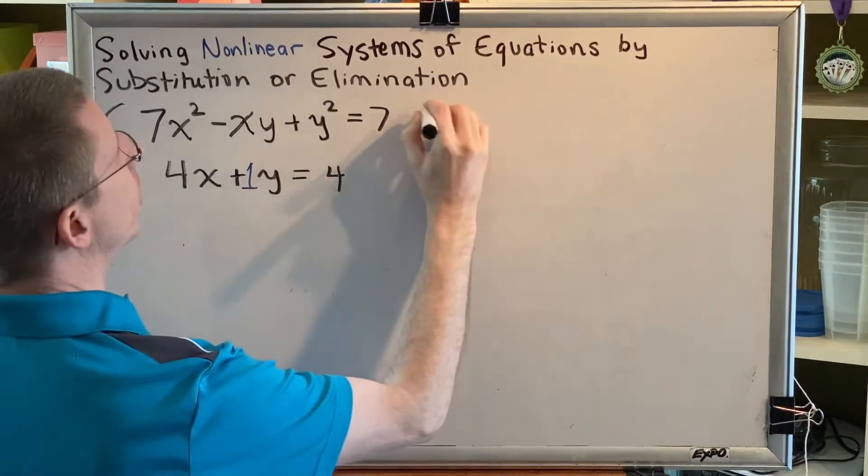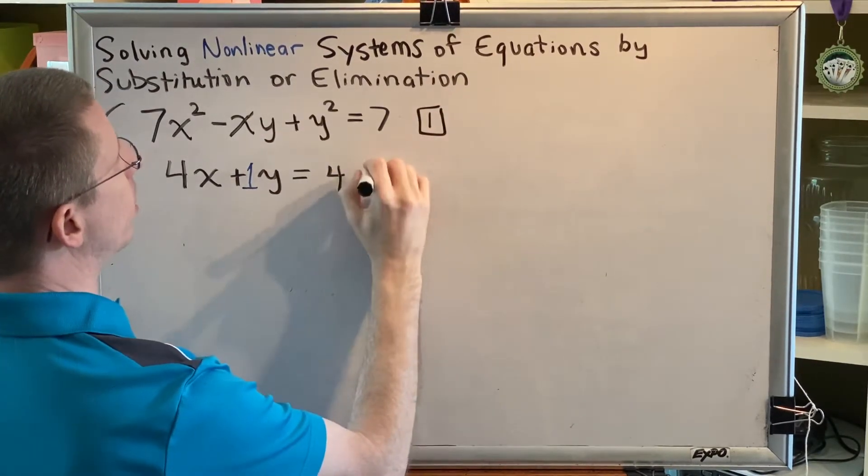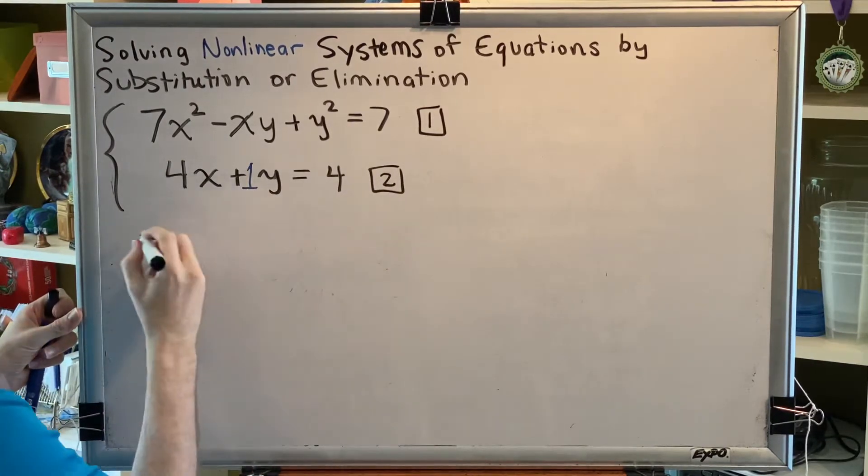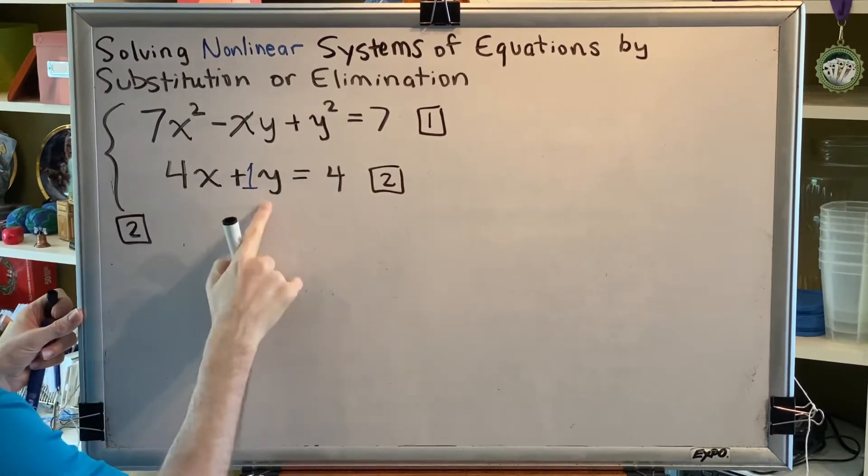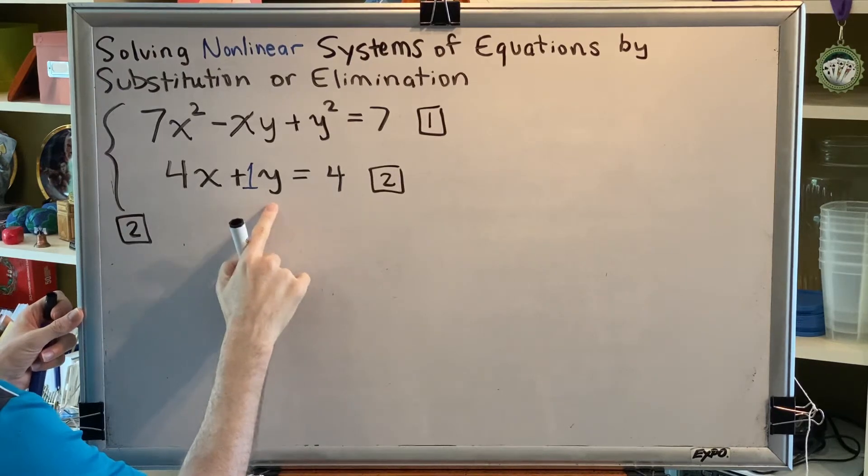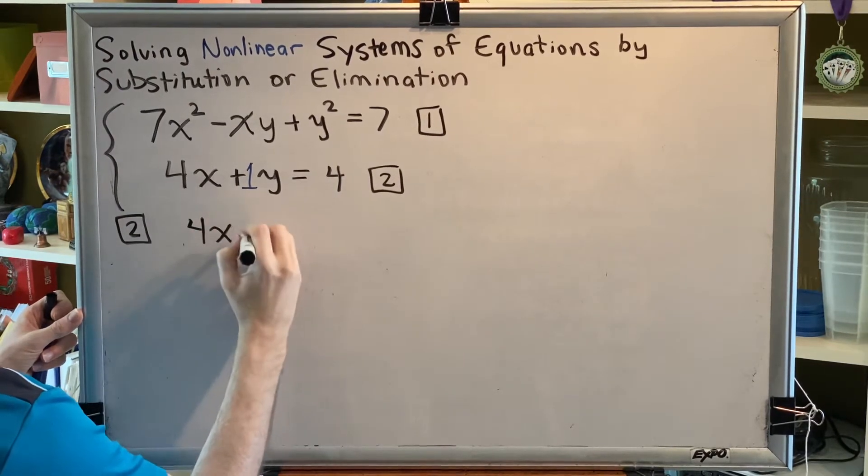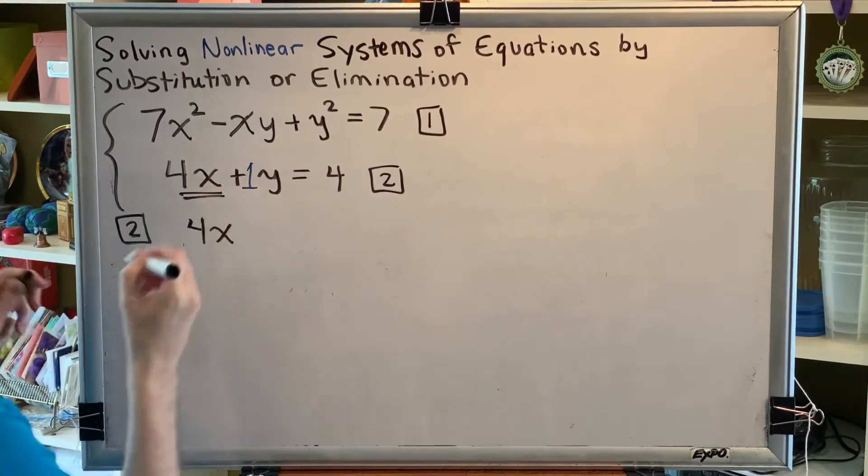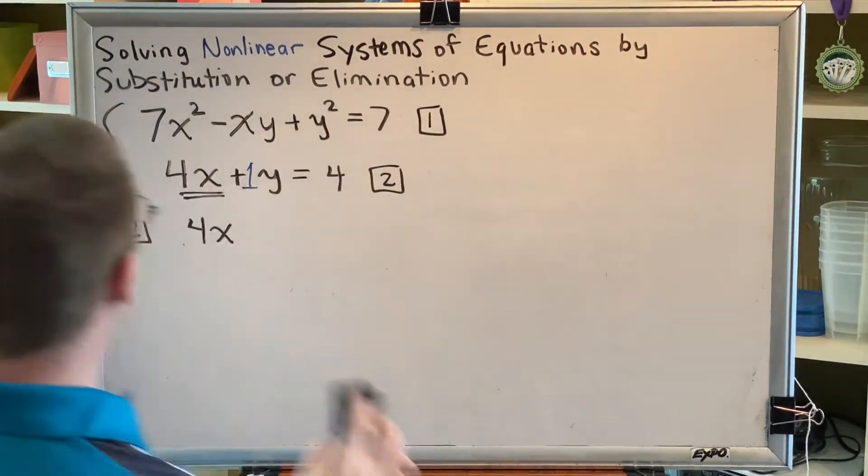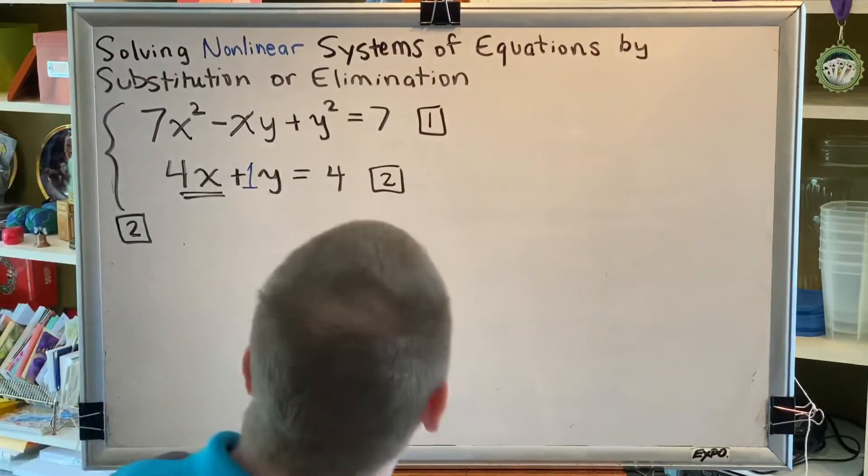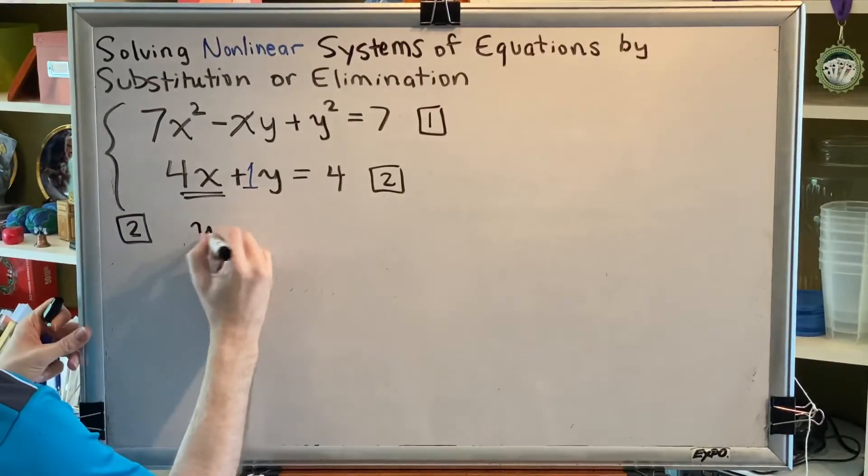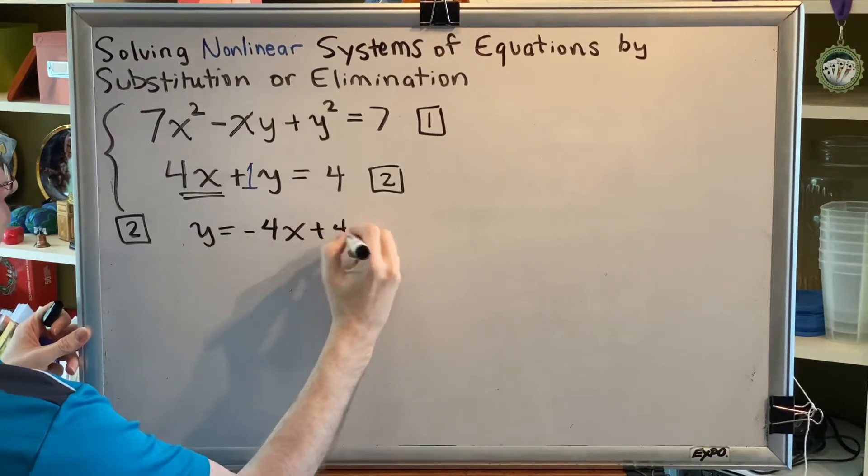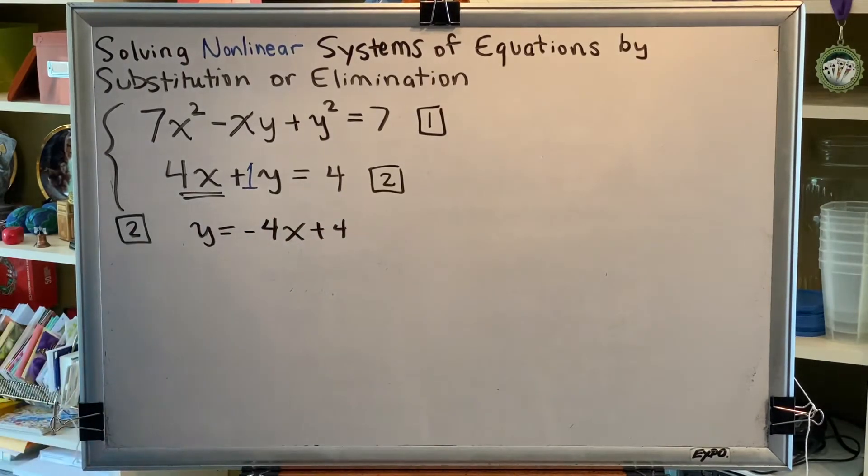Let's label our equations. This is equation 1, this is equation 2. To use substitution, we now solve equation 2 for this particular variable, the one that had a coefficient of 1 or negative 1. So to do that, we just have to recognize that we can move this term to the other side. And when a term changes sides, it changes signs. So we get y equals negative 4x plus 4. This is still equation 2, we just made it look different.